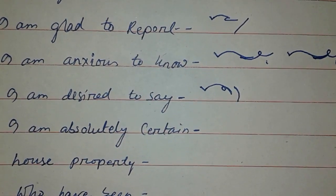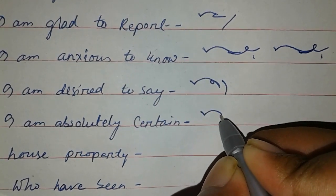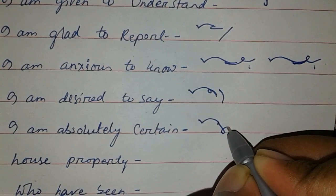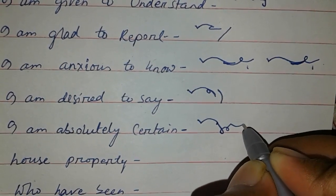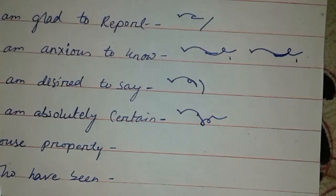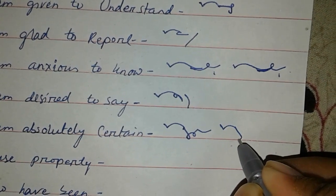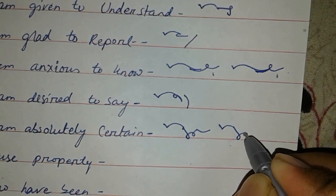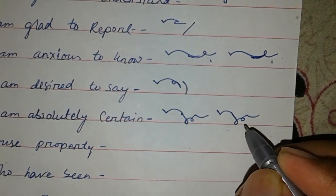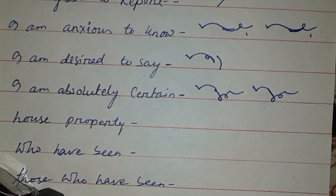I am absolutely certain. I am B as root S R D. And this is B. I am absolutely certain. And then house property.